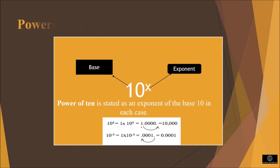The power of 10 is stated as an exponent of the base 10 — that is, 10 raised to x, where 10 is the base and x is the exponent. For a positive power of 10, move the decimal point to the right to get the corresponding decimal number. For a negative power of 10, move the decimal point to the left.